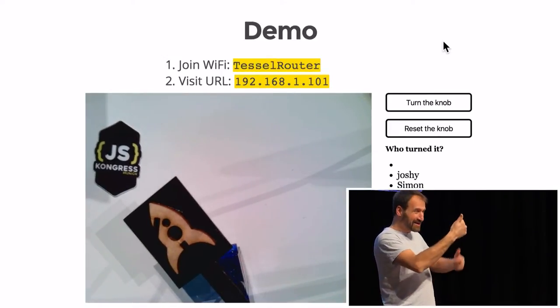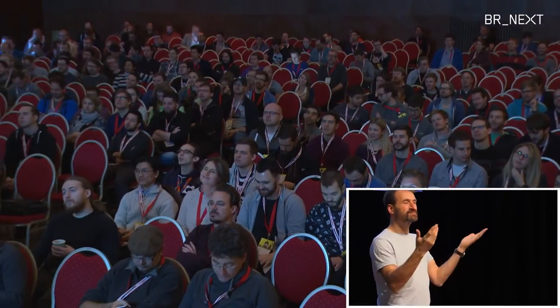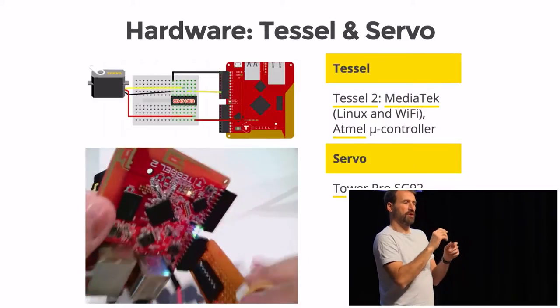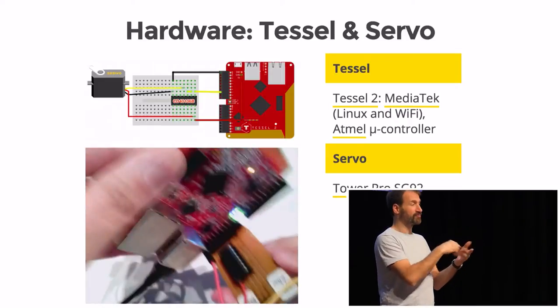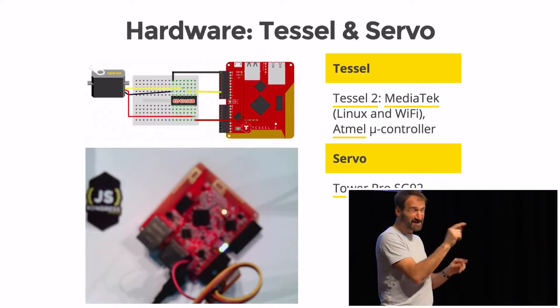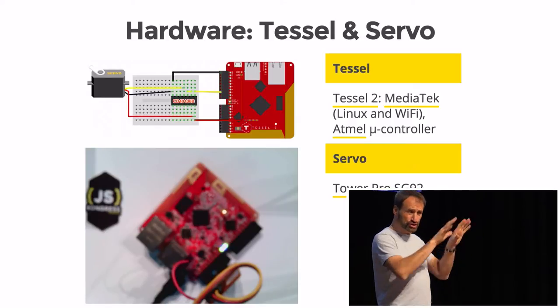Thank you to all the people who helped turn the knob. Now let's talk about the hardware itself. This is a Tesla, a single-board computer running OpenWRT, which allows you to create an access point or hotspot that some of you connected to. These are the GPIO pins, and I've connected them to a servo right here. These tiny computers are very interesting — they let you run an operating system using Node.js and connect to hardware.